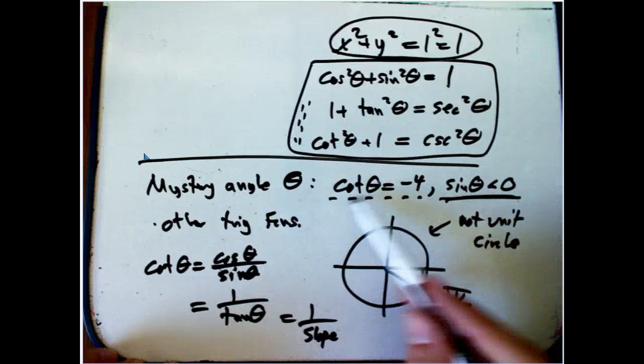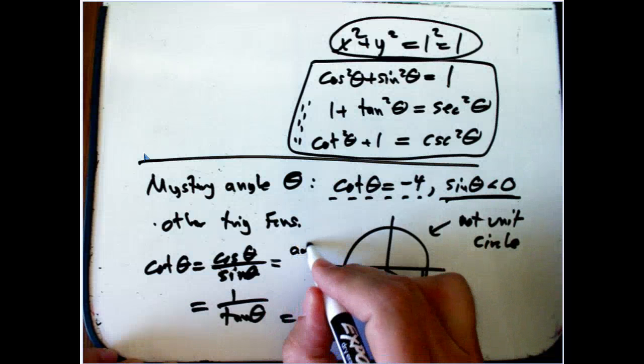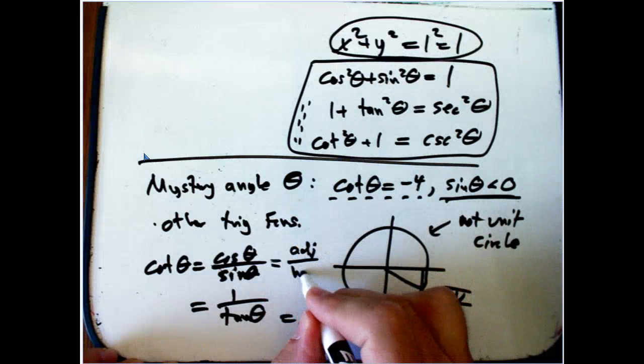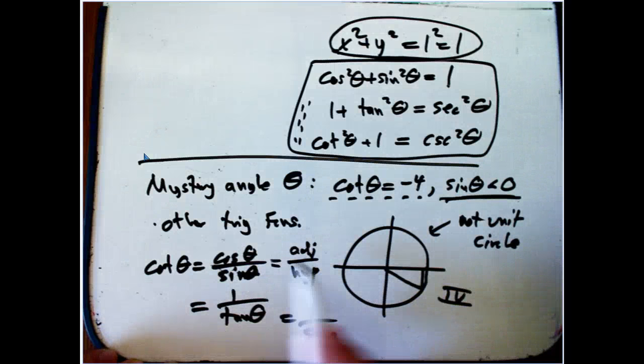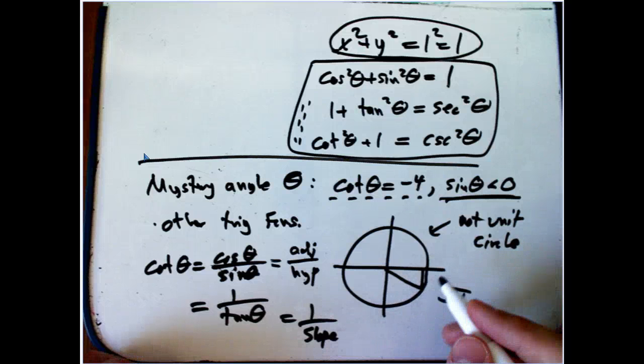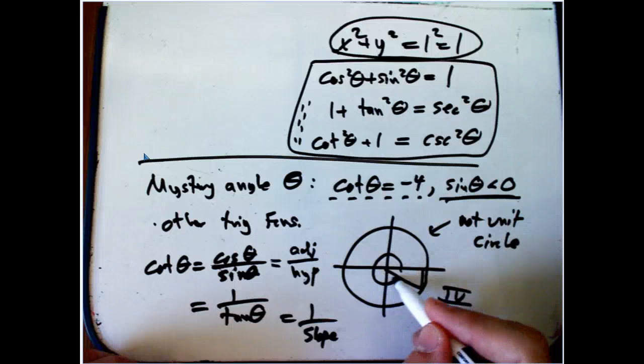So now I want cotangent theta. Yet another definition of this is adjacent over opposite. Notice how I'm pulling a lot of equivalence out for cotangent to do one problem. And that's not unusual, so we have to think about it that way. I want to build a triangle with this mystery angle here, like that. That's theta.